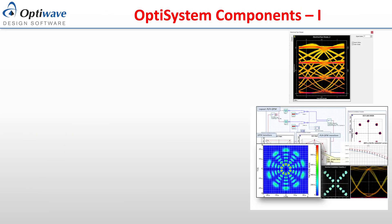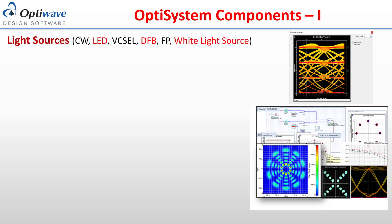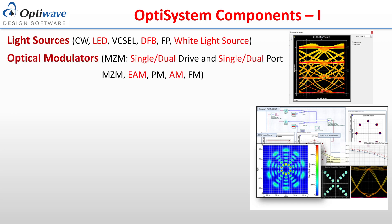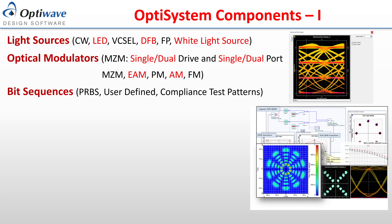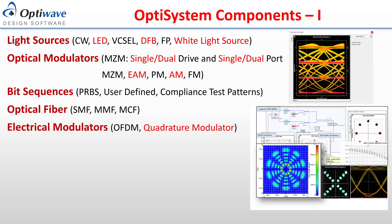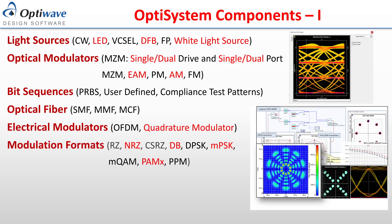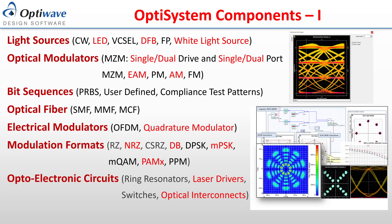The OptiSystem component library offers many different tools for creating full optical systems. Among these are light sources such as LEDs and various types of lasers, optical modulators such as MZMs and EAMs, bit sequence generators using pseudorandom generation or user-defined files, optical fibers including multi-mode fibers and multi-core fibers, electrical modulators such as OFDM and quadrature modulators, modulation formats such as RZ, duobinary, PSK, PAM, and QAM, optoelectronic circuits including ring resonators, laser drivers, and switches.